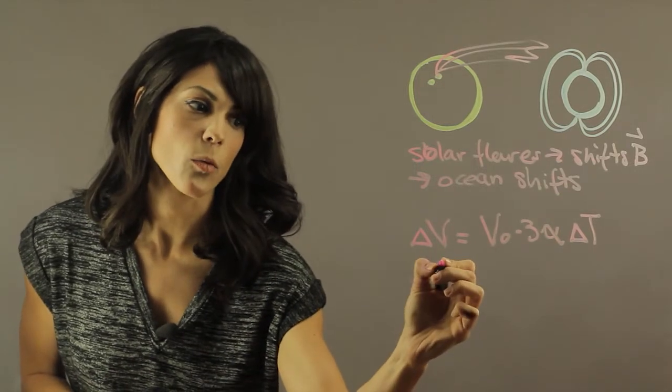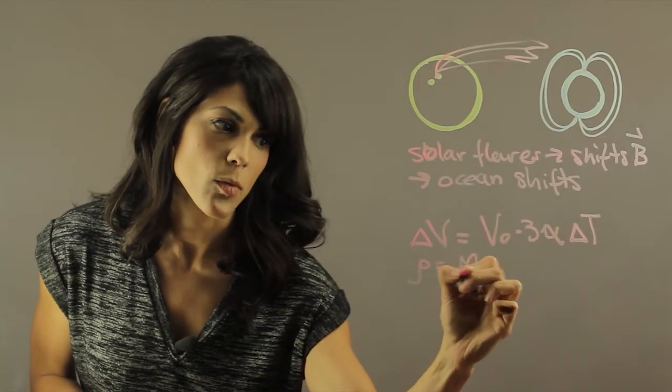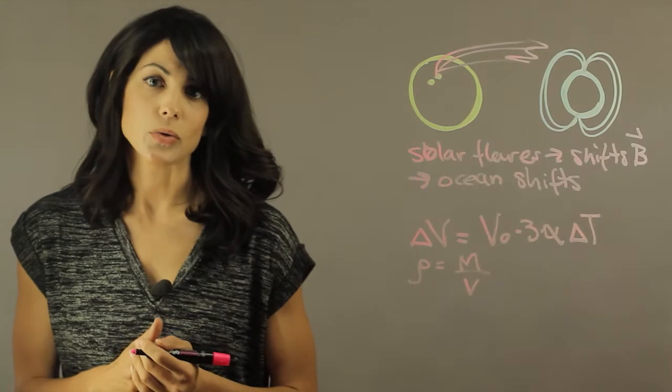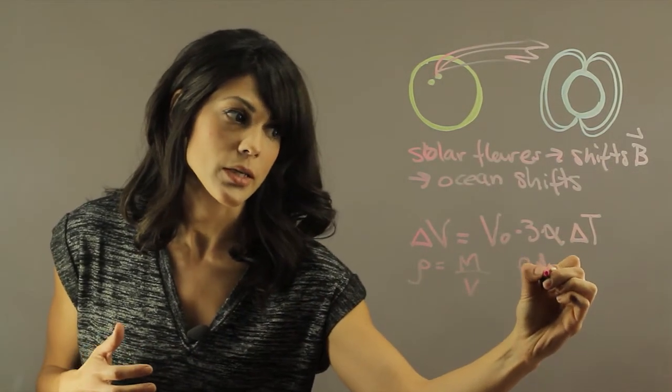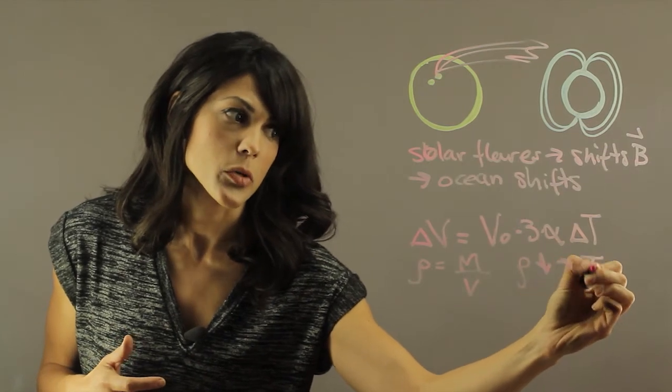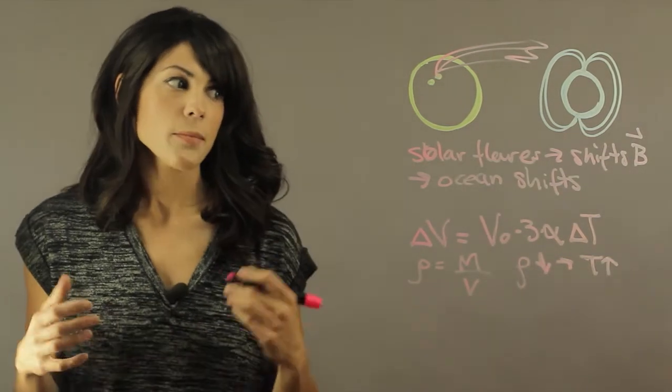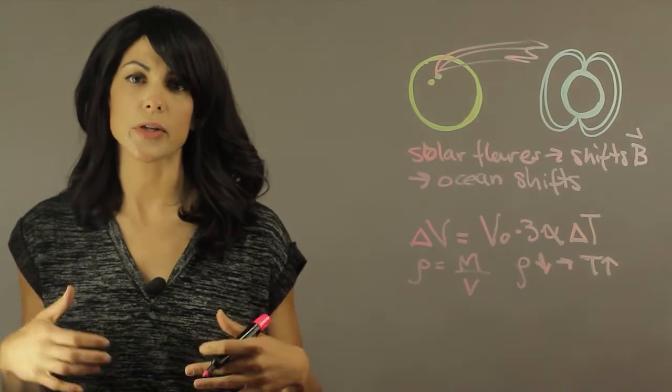Therefore the density of the water, which is the mass divided by the volume, is actually going to decrease. So the density of water of the oceans will decrease as the temperature goes up. So that means that the volumetric flow is going to increase.